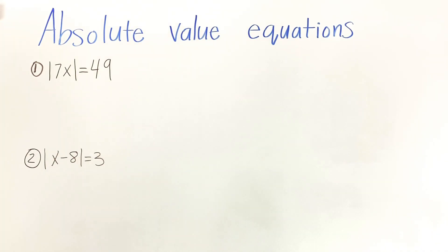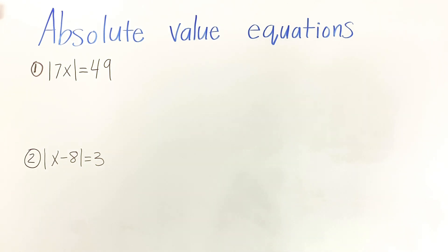In today's video we're going to be working on absolute value equations. For number one we have the absolute value of 7x equals 49. On number two we have the absolute value of x minus 8 equals 3.